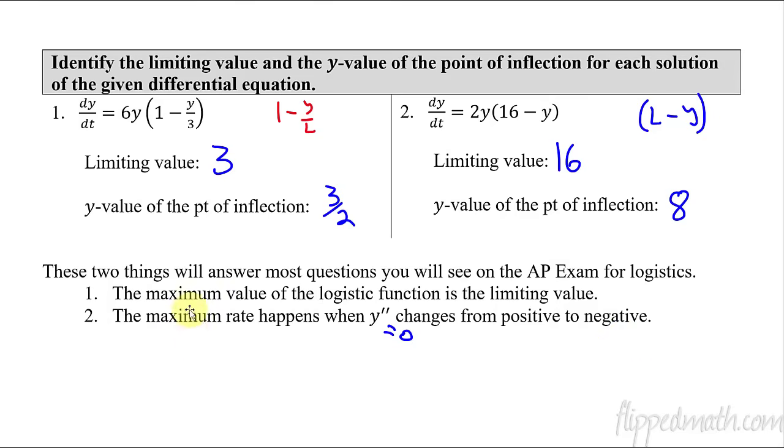And by showing that the second derivative equals zero, and then changes from positive to negative. So before I move on, let's just repeat something here. There's two different types of maximums we're looking at. The maximum value of the function versus the maximum rate of change. And those are two different things. Maximum value is the ceiling, that's the L. The maximum rate is half of L. So just distinguish between the two.